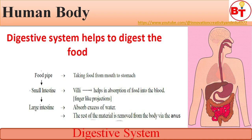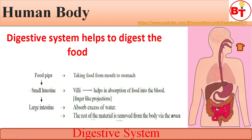In the large intestine, excess water is absorbed and the rest of the waste material is removed from the body via the anus. The small intestine can actually be very long, but it is called 'small' intestine because its diameter is much smaller compared to the large intestine.